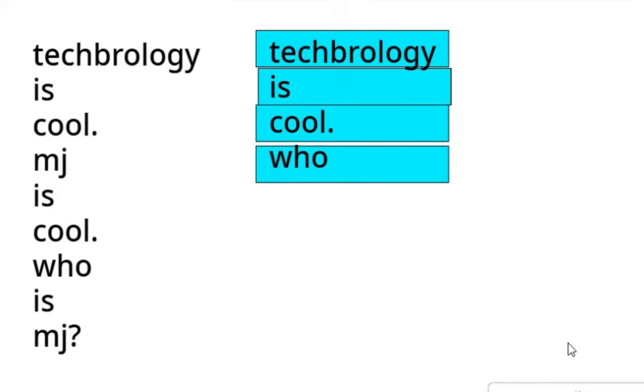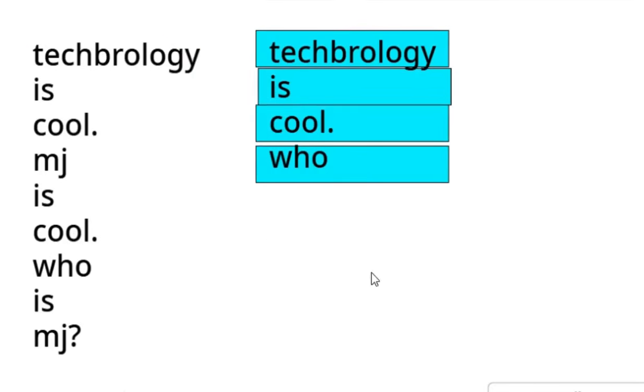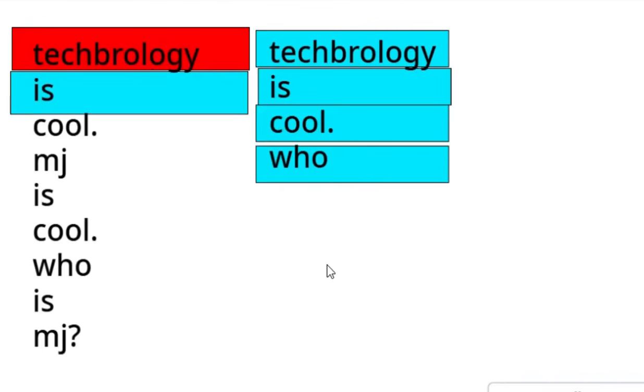So the next step is the training. So let's say that the data set is technology is cool, MJ is cool, who is MJ. So this is the data set. And then it's separated into tokens because these are the data set with no words repeated. So we can start off training by looking at the first word technology. And then it'll look for every single word that comes after technology.